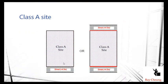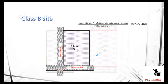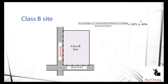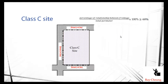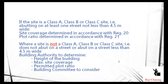To understand the requirements: if you have only one street with 4.5 meters, that defines Class A — even in the opposite direction, if it is not a corner site, it is still Class A. A corner site with two streets more than 4.5 meters wide and more than 40% of the boundary abutting the street is Class B.